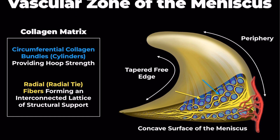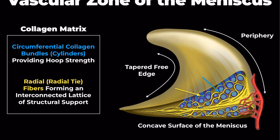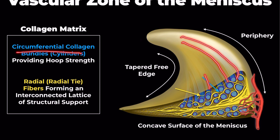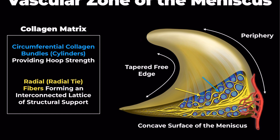The meniscus comprises primarily two types of collagen bundles. First, we have the longitudinally oriented circumferential collagen bundles running parallel to the long axis of the meniscus. Illustrated here as blue bundles, they're oriented to provide hoop strength.